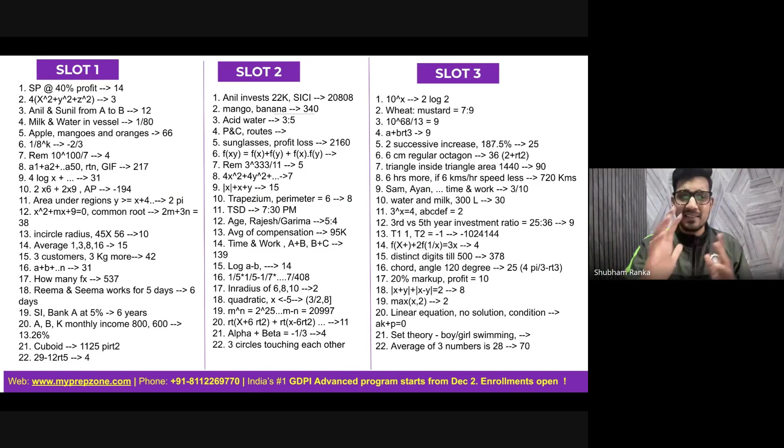So slot one, again, these were like, I don't exactly remember the full complete question, but what we have gathered is there was a question where the selling price was given and then 40 percentage profit maybe had to calculate something. Answer for that is 14. The way you read this is, see, sequence of questions can vary from individual to individual. CAT had four to five variants in which the questions were given. But I think broadly the gist was there was a question of 4X² + Y² + Z². Answer for that was 3. Then again, Anil and Sunil were traveling from A to B. The time, speed and distance question answer was 12.